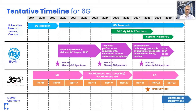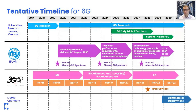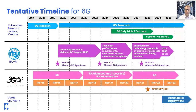Looking at a tentative timeline: research already started in 2020. ITU will most likely soon provide requirements for IMT-2030. Standardization will follow, possibly with Release 21 providing 6G standardization around 2027–2028, with the first commercial deployment around 2030. We are currently also in the Release 18 timeframe with 5G Advanced, and there may possibly be something like 5G Advanced Pro to complement what we had with LTE.